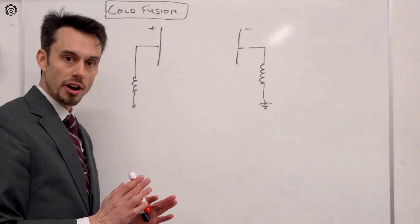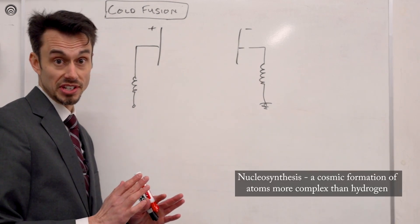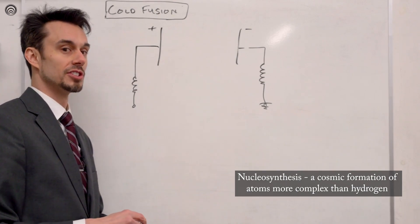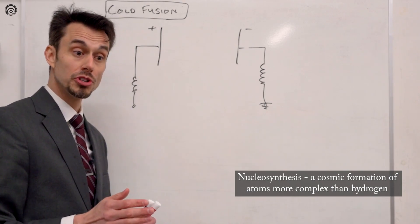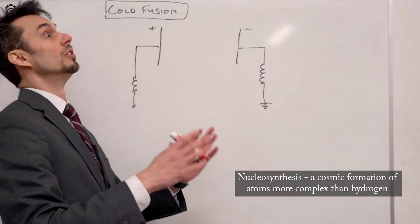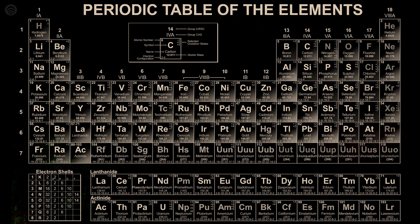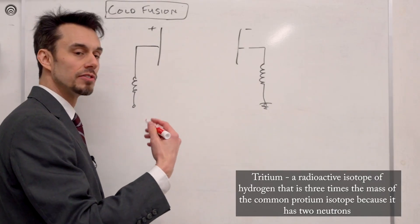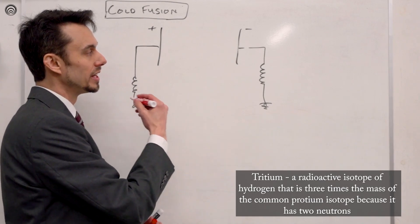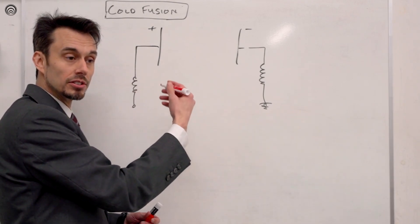In astronomy there is a word called nucleosynthesis — quite a mouthful. Nucleosynthesis is when proton-to-proton chain reactions occur. In the periodic table, hydrogen is one, helium is two, and tritium is a hydrogen isotope with different neutrons.